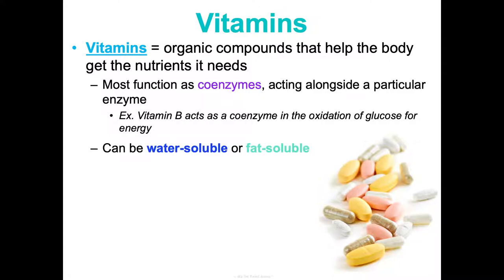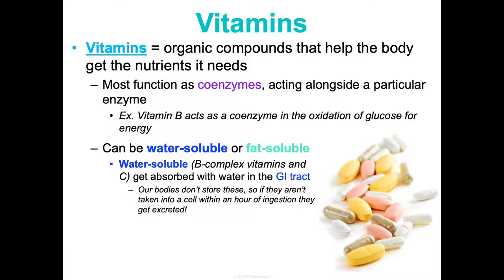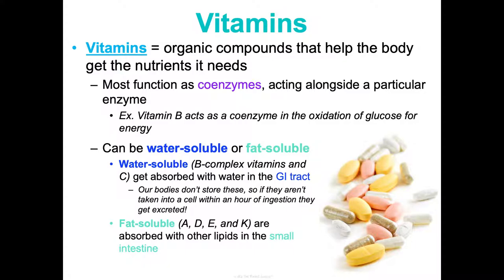Vitamins can be classified as water-soluble or fat-soluble. Water-soluble vitamins, like the B-complex vitamins such as B12 and vitamin C, get absorbed with water in your gastrointestinal tract. Our bodies don't store these, so if they aren't taken into a cell within an hour of ingestion they get excreted. No single food contains all required vitamins, so a balanced diet is really important. Fat-soluble vitamins — like vitamins A, D, E, and K — are absorbed with other lipids in the small intestine, and our bodies can and do store these.